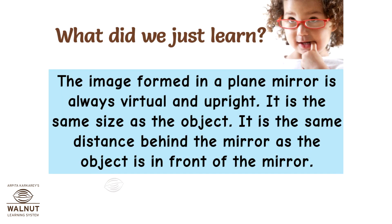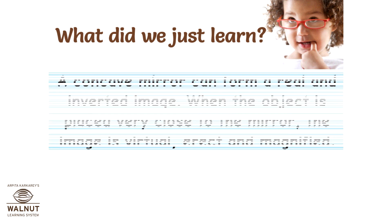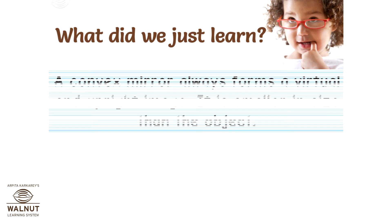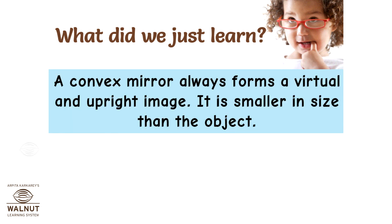The image formed in a plain mirror is always virtual and upright, the same size as the object, and the same distance behind the mirror as the object is in front of it. A concave mirror can form a real and inverted image; when the object is placed very close to the mirror, the image is virtual, erect, and magnified. A convex mirror always forms a virtual and upright image that is smaller in size than the object.